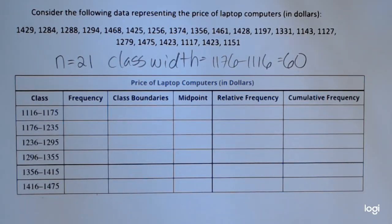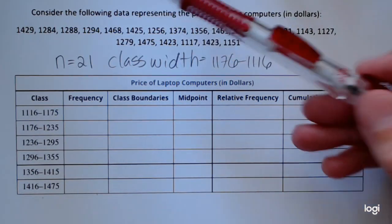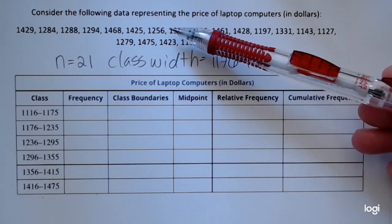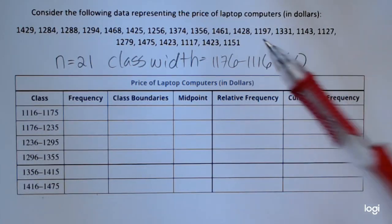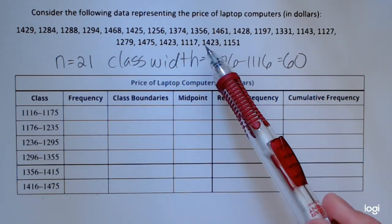In this video, I'm going to be completing a frequency distribution table. Consider the data representing the price of laptop computers in dollars. So I have a data set here that's not put in order. There's 21 values, and I've already been given the lower class limits and the upper class limits.